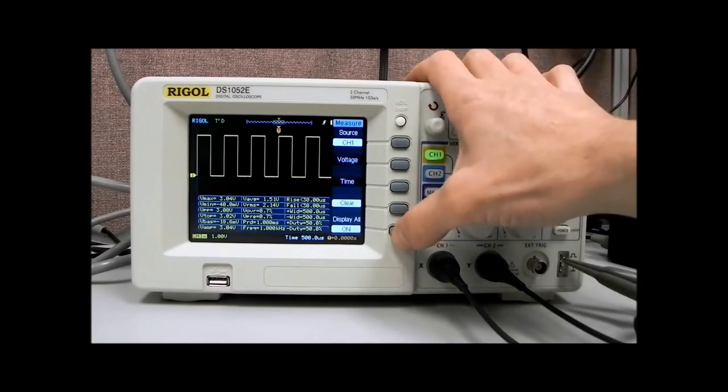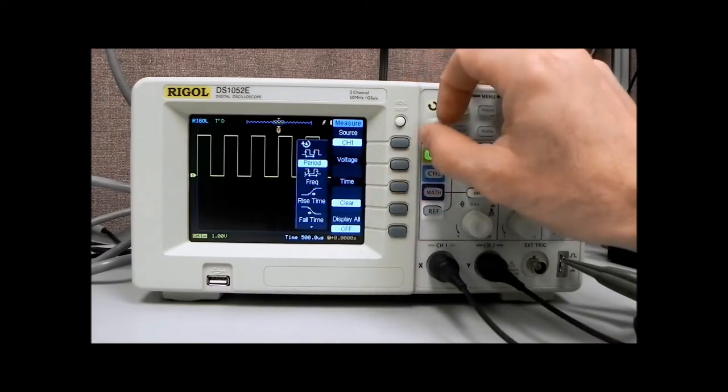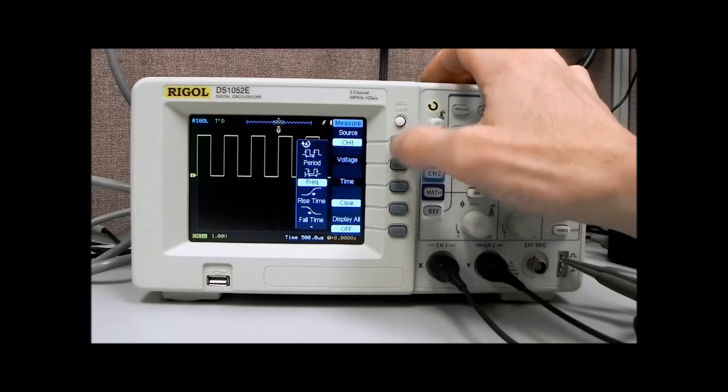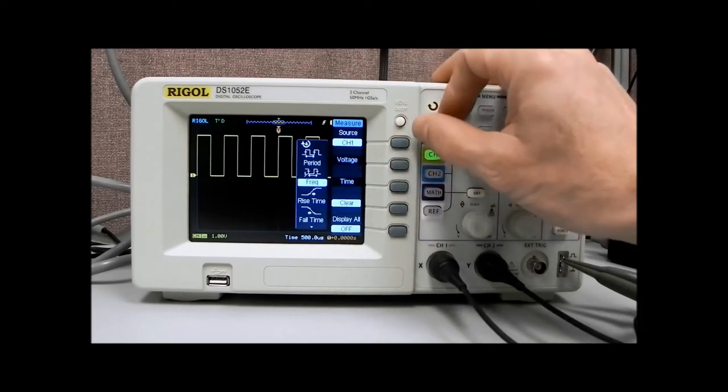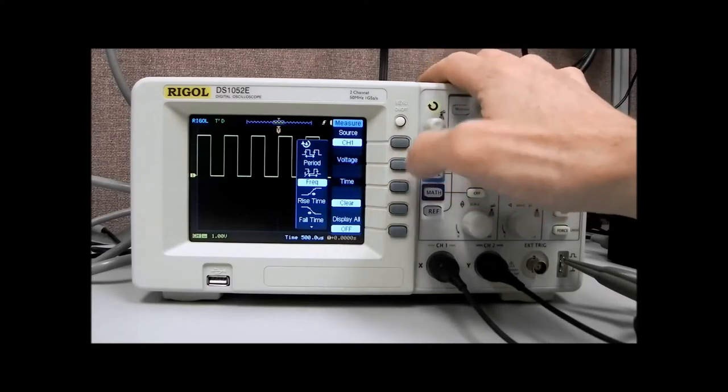Hit measurement again, and we'll hit display off, so all of those go away. But now let's go to time, and let's rotate down to frequency. Again, we can pick individual measurement types, both on the time and the voltage areas. But time, I'm going to select frequency.